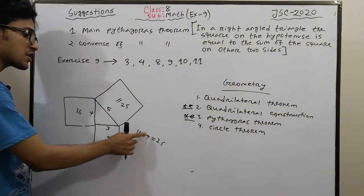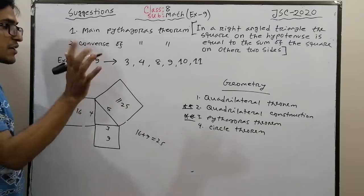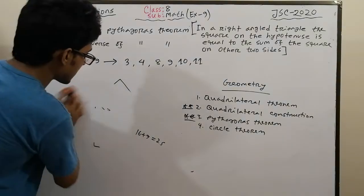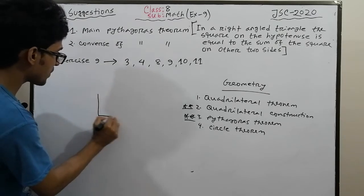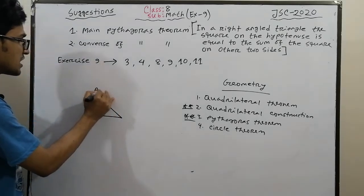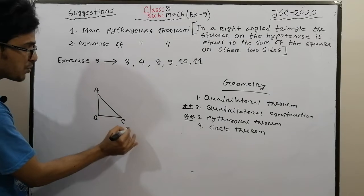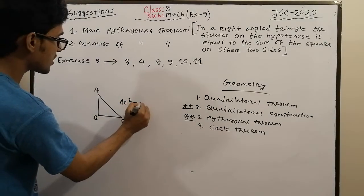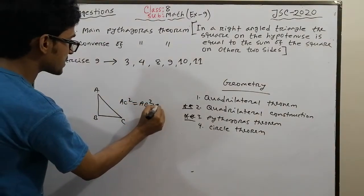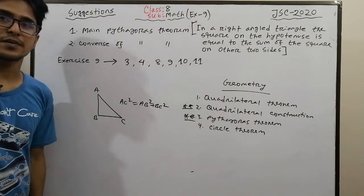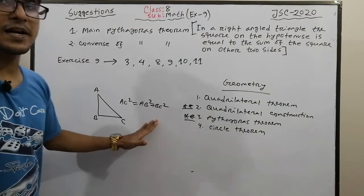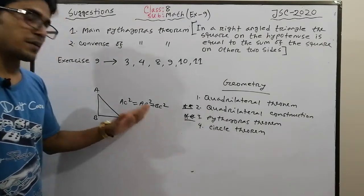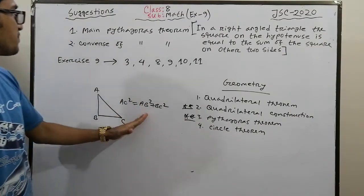The hypotenuse squared equals the sum of the squares of the other two sides. This is the Pythagorean theorem. The formula is: AC squared equals AB squared plus BC squared. This is the fundamental theorem.